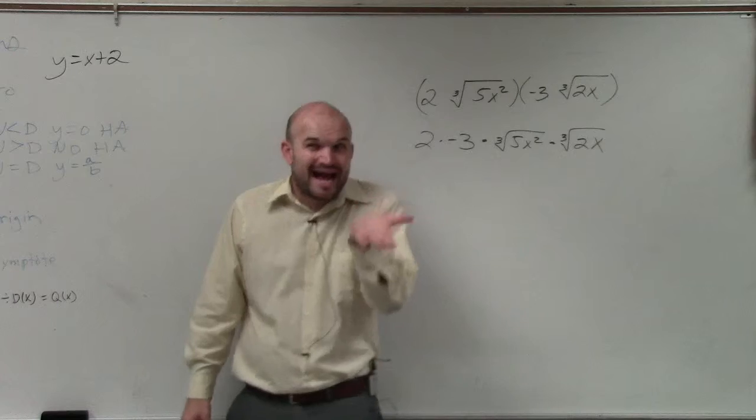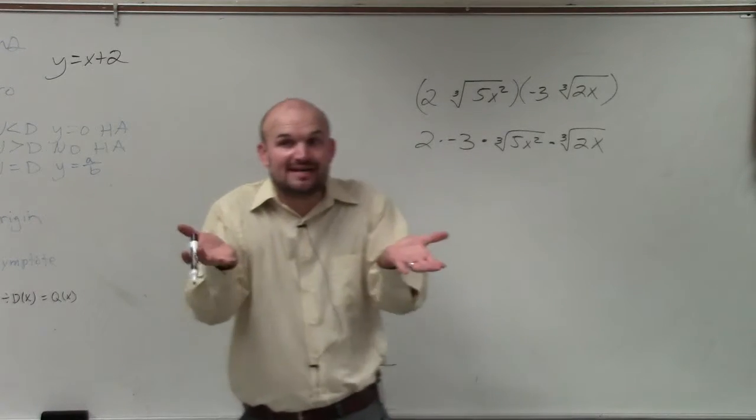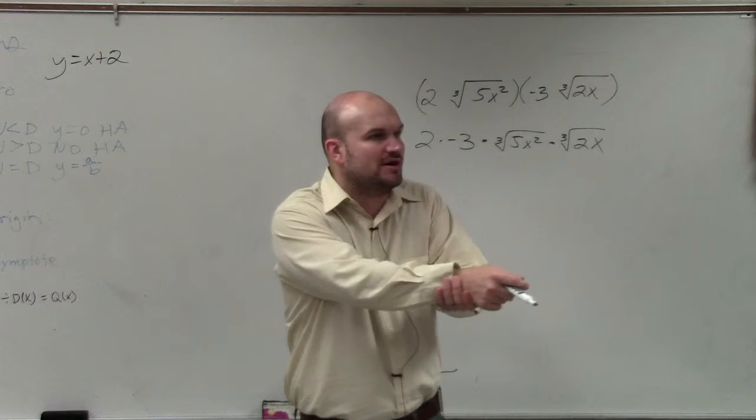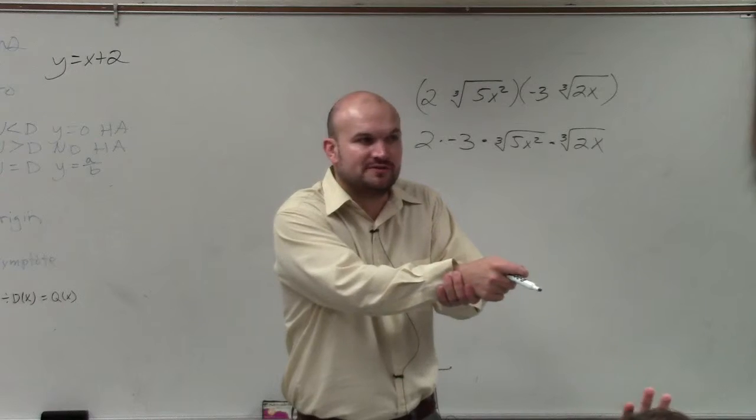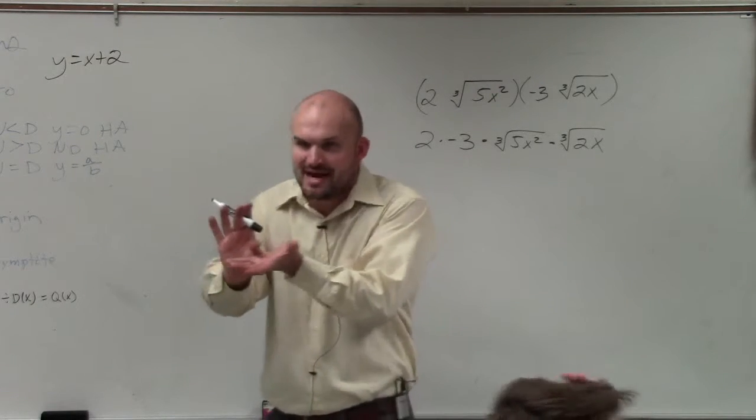So remember, when you're adding or subtracting, the radicands have to be the same. But even when the radicands are the same, you don't add them, right? That first answer was square root of 2x plus square root of 2x is just 2 square root of 2x. You're not changing it to 4x. You're not actually changing the value of the radicand.